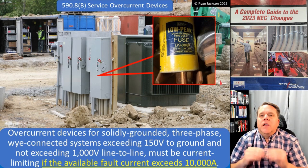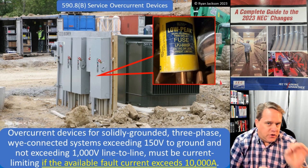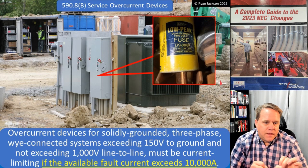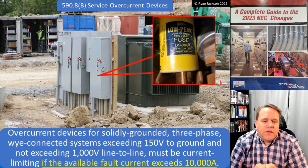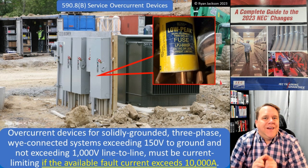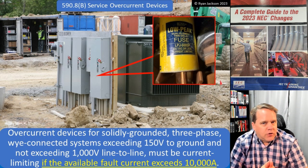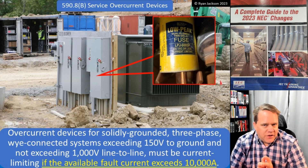So if you have, for the States, 277/480 for your temporary service, then at the service disconnect, the overcurrent device must be a current limiting device — but now only if the available fault current exceeds 10,000 amps.